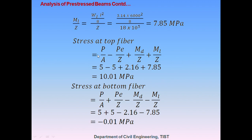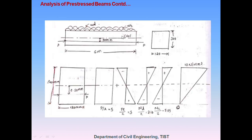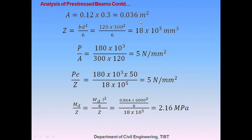To find the stress at the top and bottom fibers, we need to determine P/A, Pe/Z, MD/Z, and ML/Z. Firstly, P/A: where P is the pre-stressing force and A is the area of cross-section. The pre-stressing force is 180 kN and the area of cross-section is 120 × 300 = 0.036 m². Therefore, P/A equals 5 N per mm square.